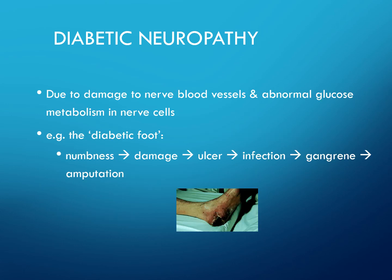Diabetic neuropathy occurs due to damage of nerve blood vessels and abnormal glucose metabolism in nerve cells. This includes what is known as the diabetic foot: numbness, damage, ulceration, infection, gangrene, and ultimately amputation. You can see a picture of gangrene below.